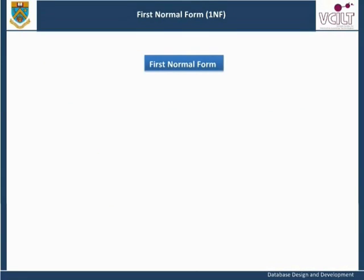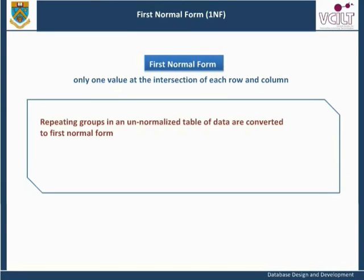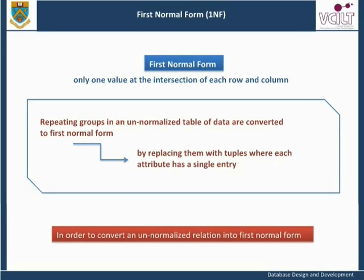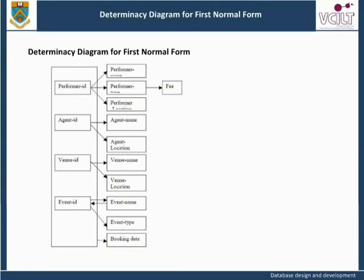First Normal Form (1NF): A relation is in first normal form if there is only one value at the intersection of each row and column. In order to convert an unnormalized relation into first normal form, we must identify the key attributes involved.